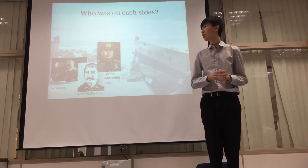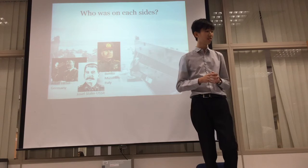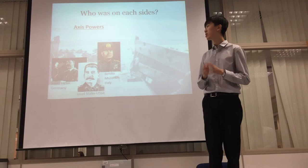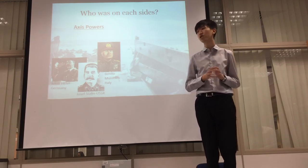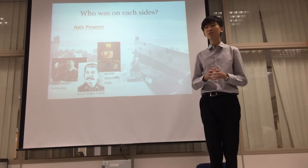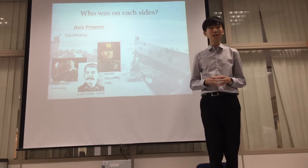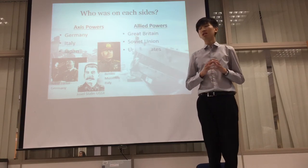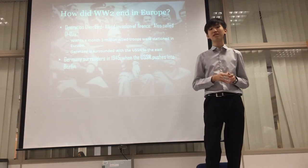And who was on each side? Mainly, there is an Axis power and Allied power. Axis power consists of Germany, Italy, and Japan, whose leaders are Adolf Hitler for Germany, Benito Mussolini for Italy. The Allied power consists of Britain, USA, the Soviet Union, and many other countries. However, France surrendered to Germany in 1940.